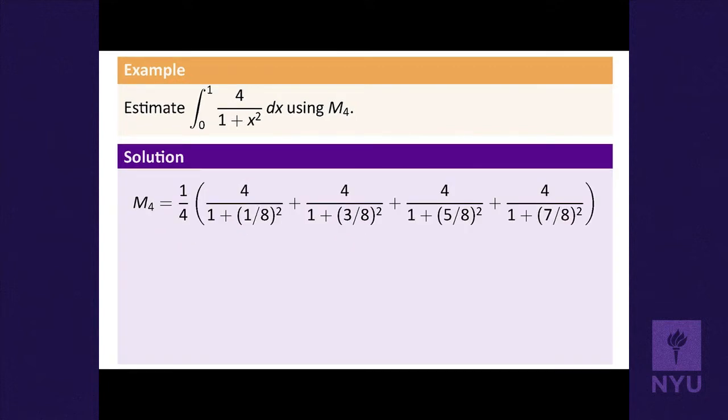We take f(1/8)×(1/4) + f(3/8)×(1/4) + f(5/8)×(1/4) + f(7/8)×(1/4). This is our midpoint rule with four divisions — an approximation to the integral.